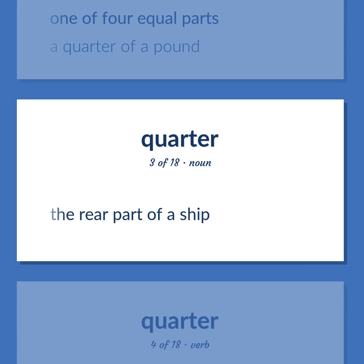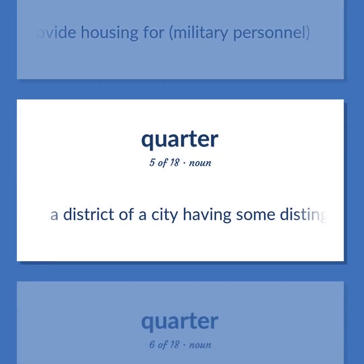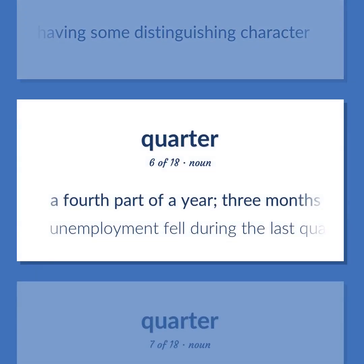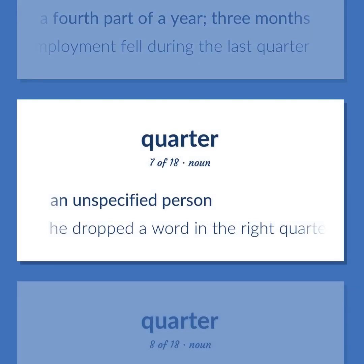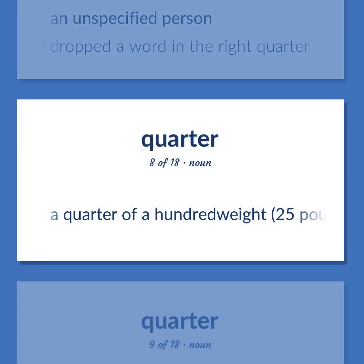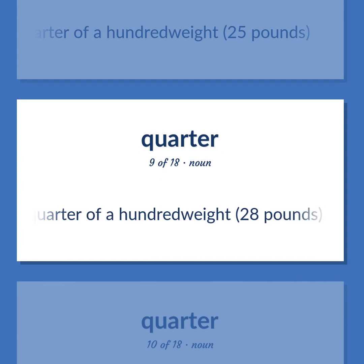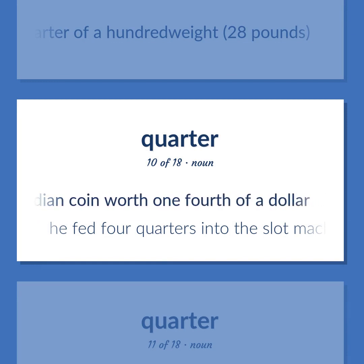Provide housing for military personnel. A district of a city having some distinguishing character. A fourth part of a year — three months. Unemployment fell during the last quarter. An unspecified person. He dropped a word in the right quarter. A quarter of a hundredweight, twenty-five pounds. A quarter of a hundredweight, twenty-eight pounds. A United States or Canadian coin worth one-fourth of a dollar. He fed four quarters into the slot machine.